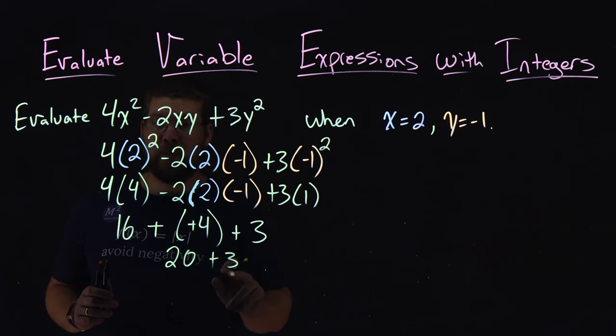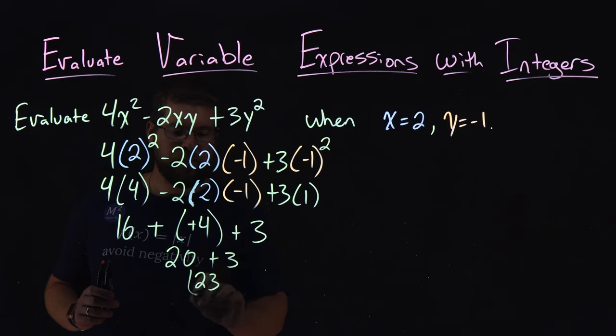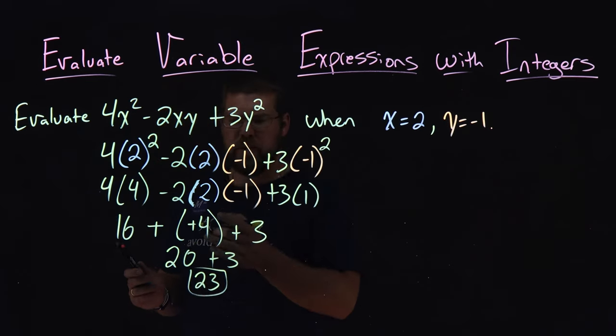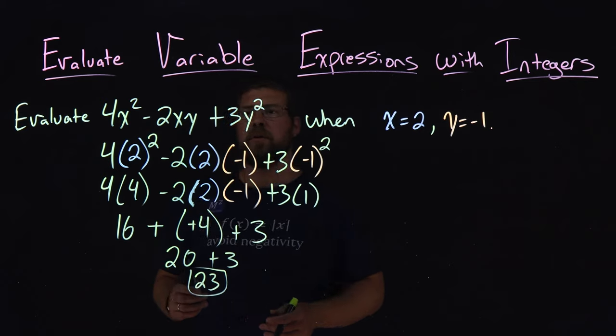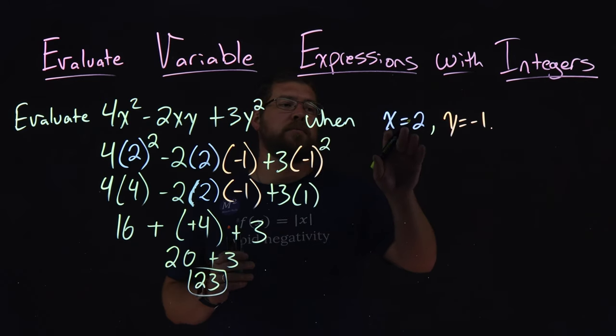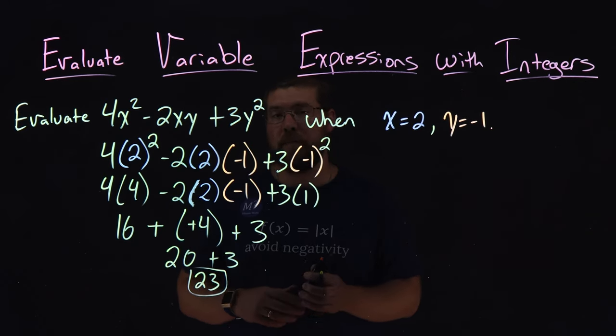Now, 20 plus a 3 is a good old 23. And there we have it. Our answer here, pretty simple. We get a positive 23 when we evaluated our expression when x is 2, and y equals a negative 1.